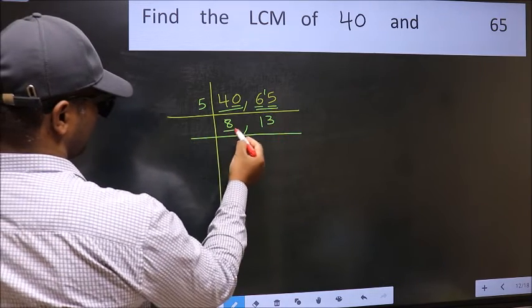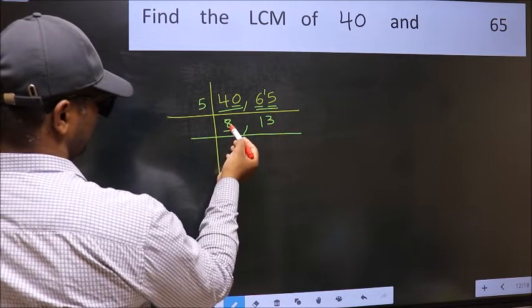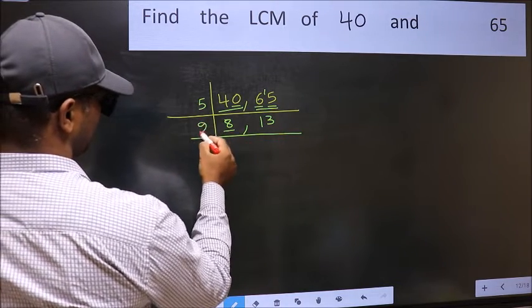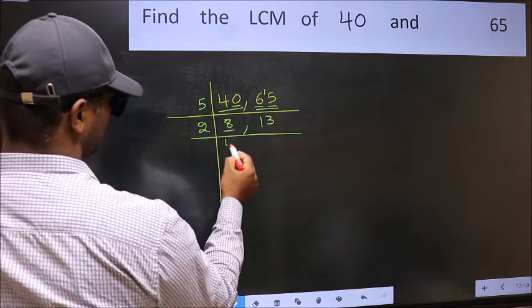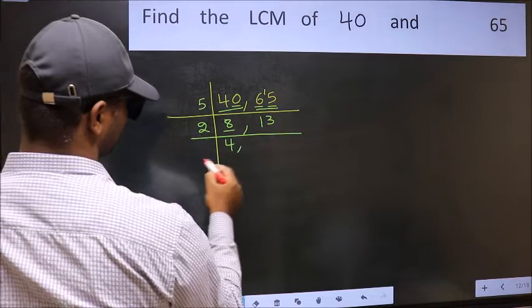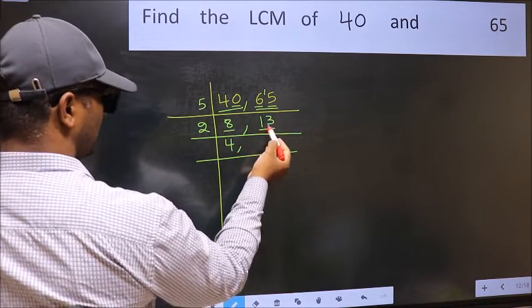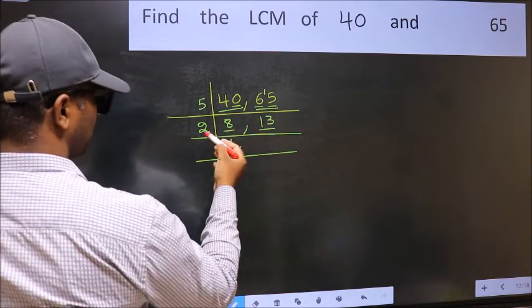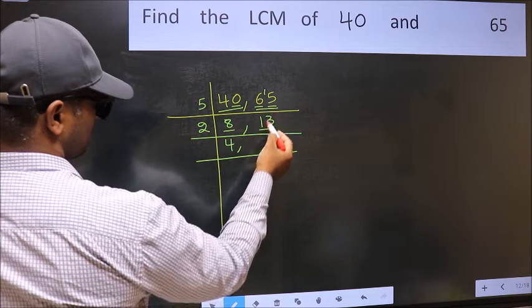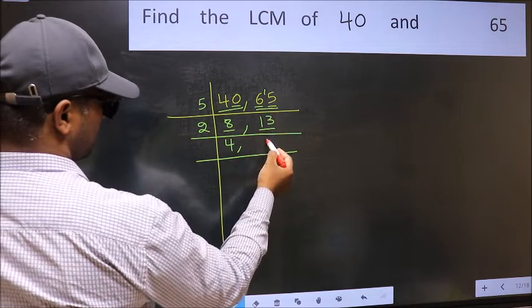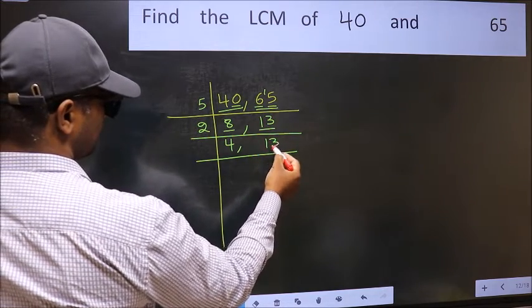Now here we have 8. 8 divided by 2 is 4. The other number is 13, which is not divisible by 2, so you write it down as it is.